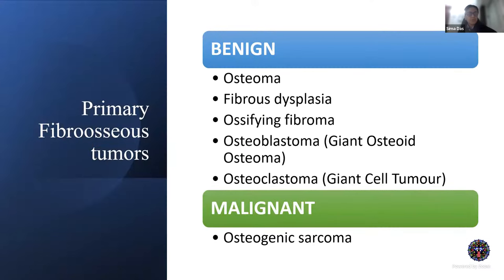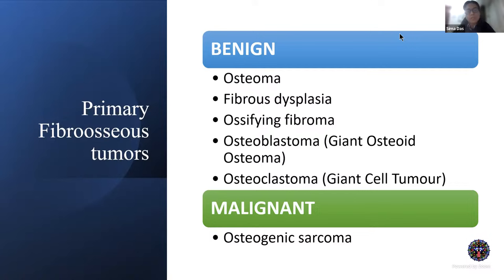Coming to primary bony tumors: the benign ones include osteomas, and developmental anomalies in the form of fibrous dysplasia; we'll also discuss ossifying fibroma and the malignant tumor osteogenic sarcoma — these are the four or five important ones. There is an extensive list of other lesions like osteoblastoma, osteoclastoma, and giant cell tumors, but most are rarely seen in and around the orbit, and their diagnosis mainly remains histopathological, with radiological appearances that can be quite overlapping.